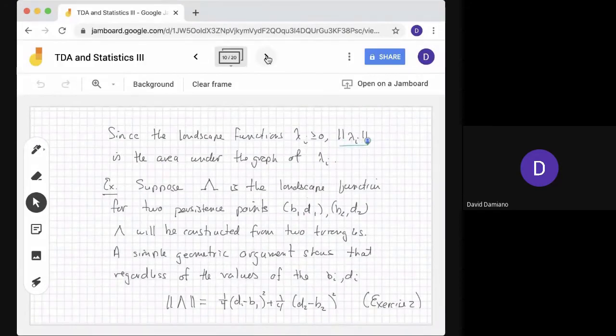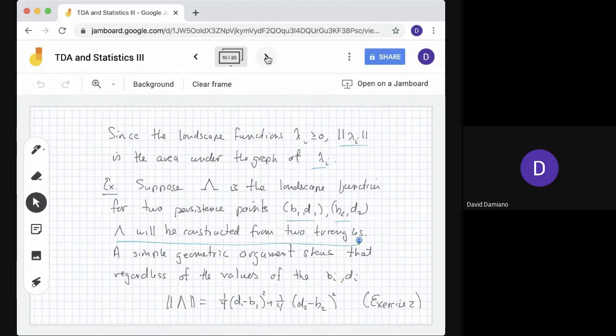Since the landscape function λi ≥ 0, the norm of λi is just the area under the graph of λi. Suppose λ is the landscape function of two persistence points constructed from two triangles. A simple geometric argument, which will be an exercise, shows that regardless of the values of bi, di - whether the triangles overlap or not, or one is inside the other - the norm will always be (1/4)(d1-b1)² + (1/4)(d2-b2)².